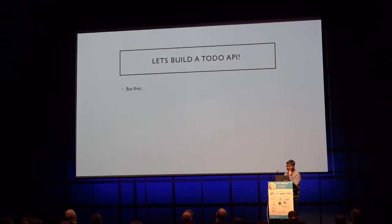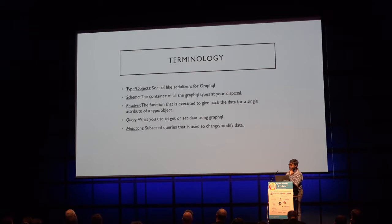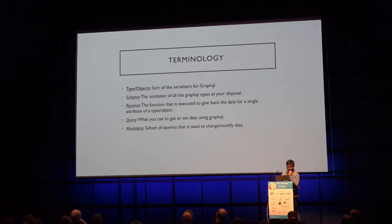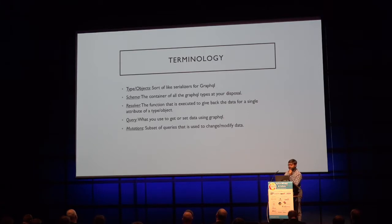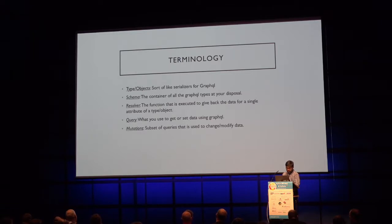Let's build a Todo API. But first, some terminology. Types and objects are basically like serializers in GraphQL — similar to a Django REST framework serializer that spits out JSON. A schema contains all the GraphQL types at your disposal. A resolver is a function that is executed to return a particular attribute of an object. A query is how you get or set data in GraphQL, and mutations are how you change data. I'm using this terminology throughout, so refer back to this if needed.